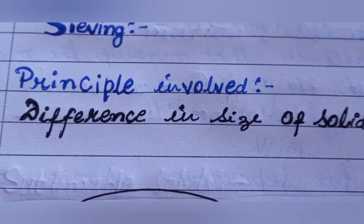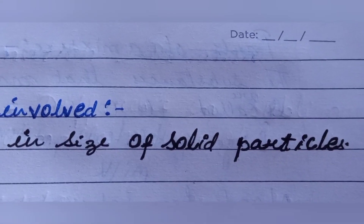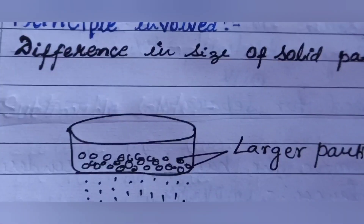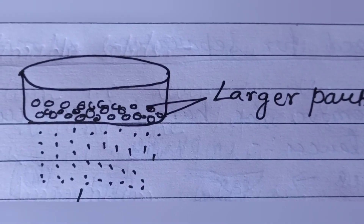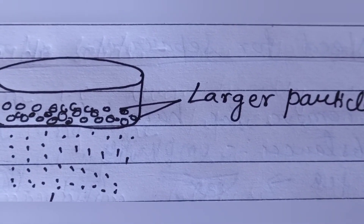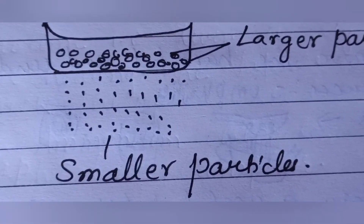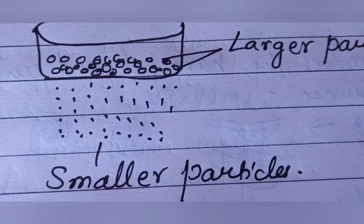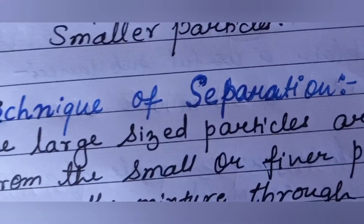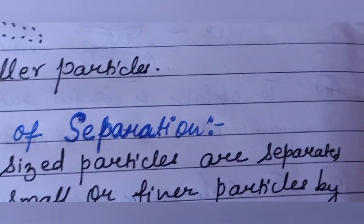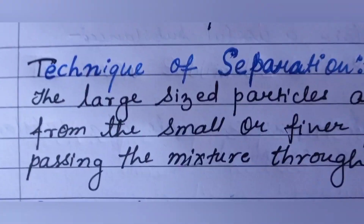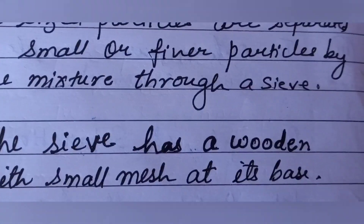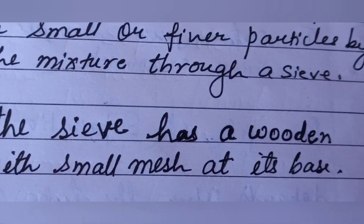The principle involved in sieving is the difference in the size of the solid particles. This is a sieve, and what happens when we sieve wheat flour? The larger particles of the husk remain over the sieve, and the fine flour comes out through the fine mesh and is collected in the bowl.